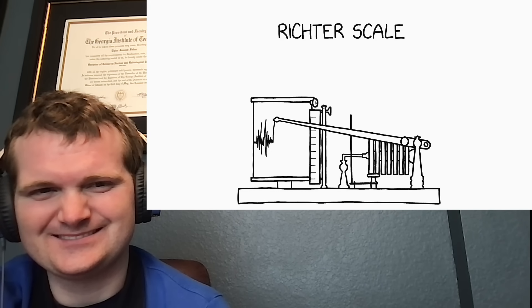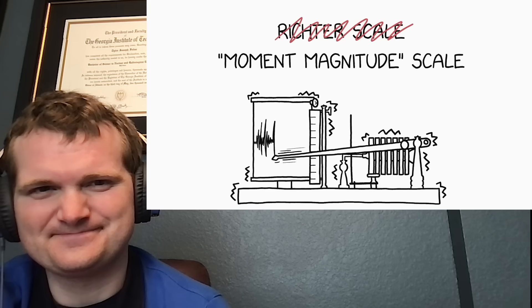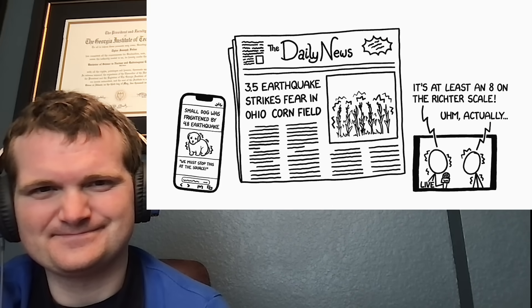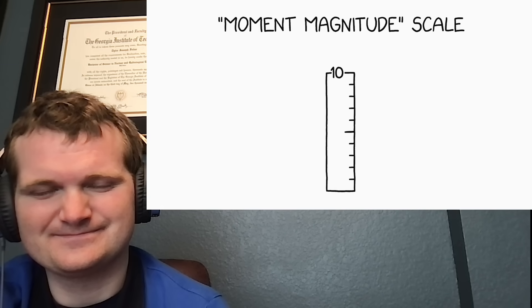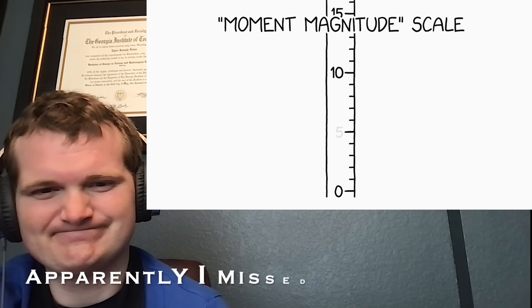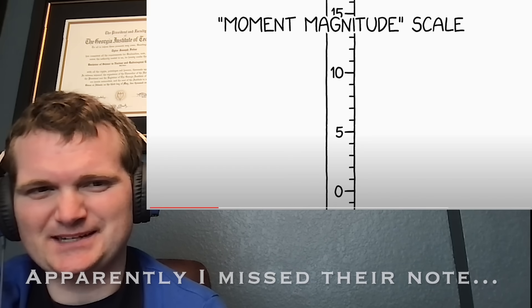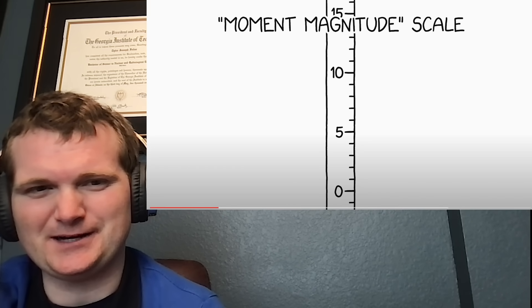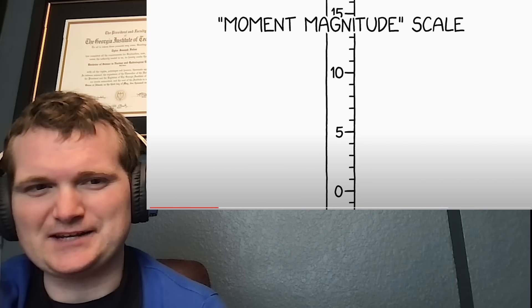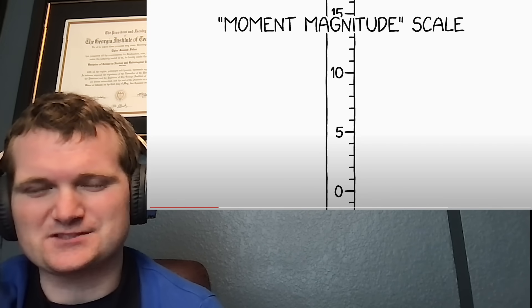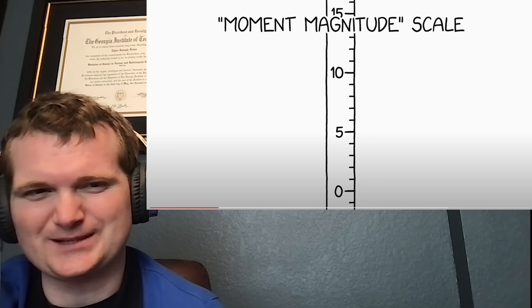The Richter scale, which has technically been replaced by the moment magnitude scale, measures the strength of an earthquake. Since we usually hear about earthquakes with ratings somewhere between 3 and 9, a lot of people probably think of 10 as the top of the scale and 0 as the bottom. In fact, there is no top or bottom to the scale. It's an exponential scale. No top, no bottom. And going negative does not mean you're going to have backwards earthquakes. It just means they're going to be really small.